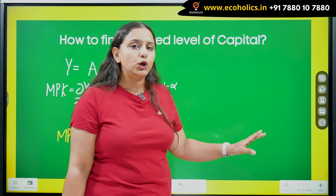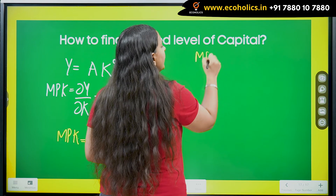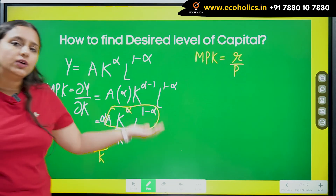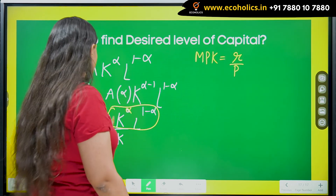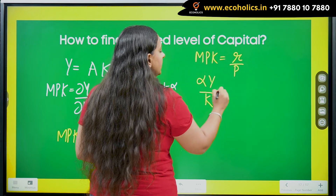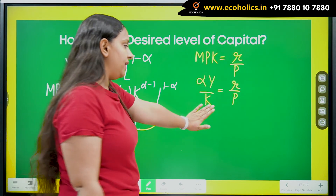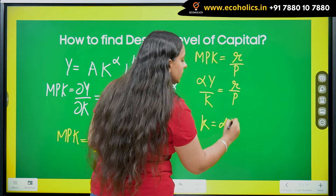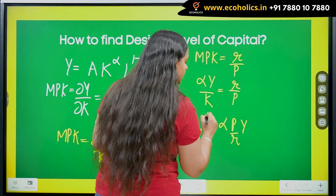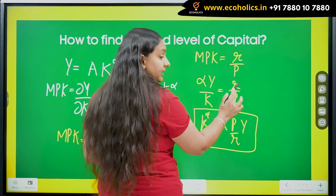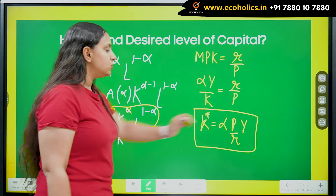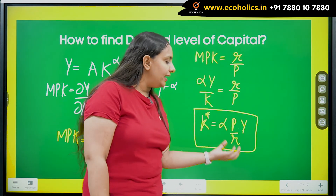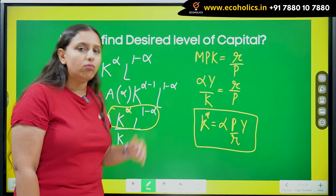Now I need to equate MPK to the real rental price, which is my user cost of capital. The real rental price is R/P — dividing by P converts it to a real variable. So setting α·y / K = R/P and solving for the optimum level of capital K*, we get K* = α·(P/R)·y. As you can see, if output increases, your optimal capital increases. And since P/R is the inverse of the real rental price, if the rental price increases, your desired capital stock goes down.